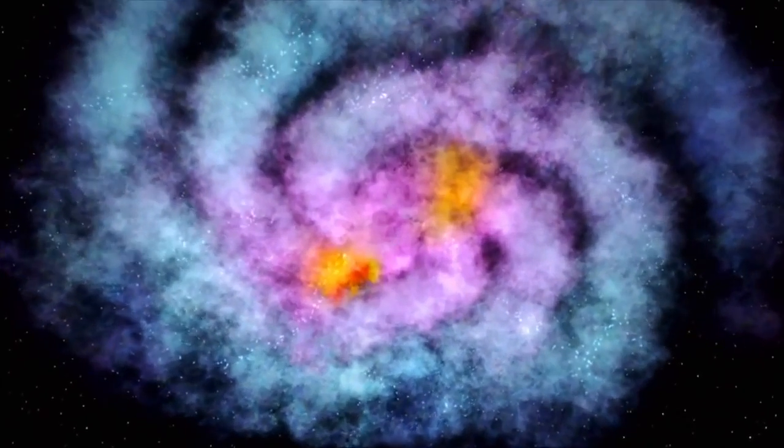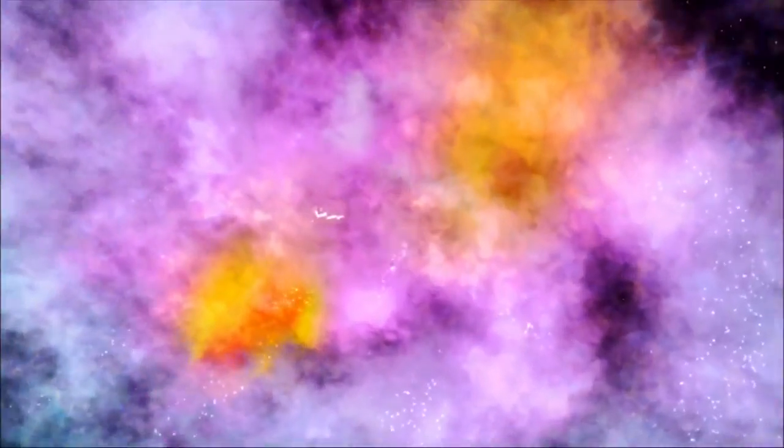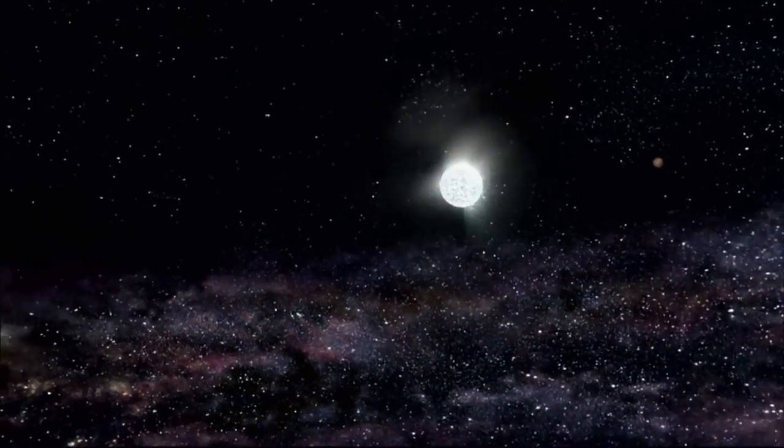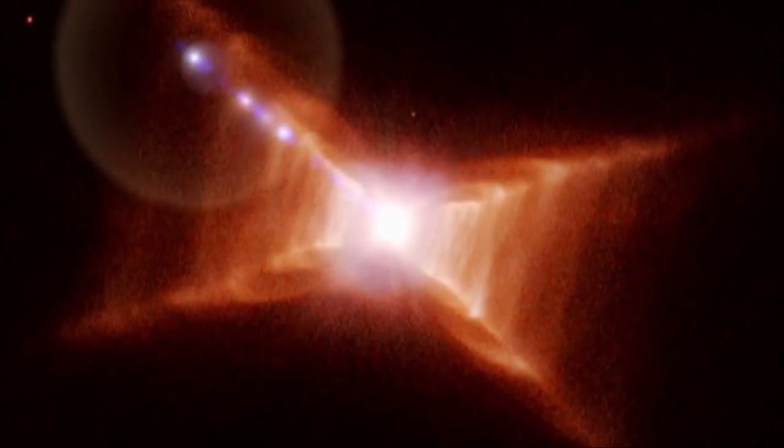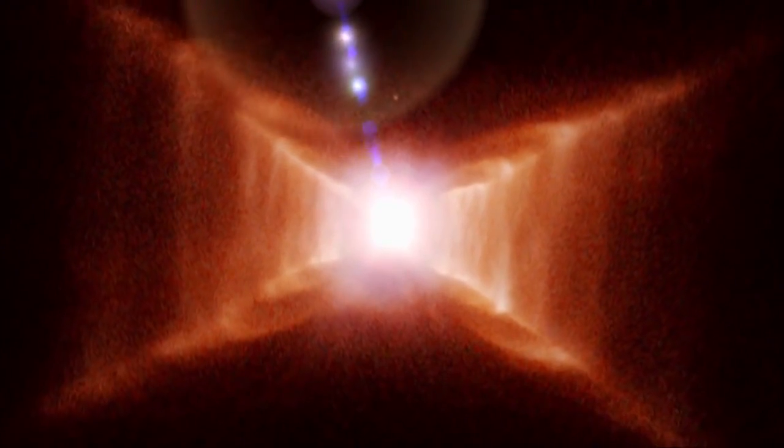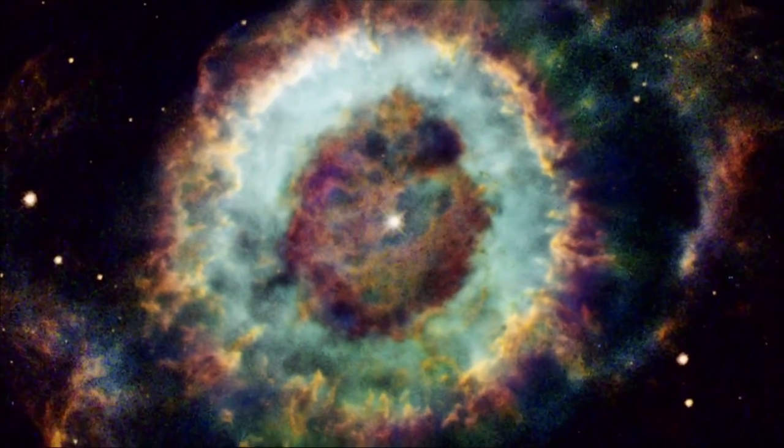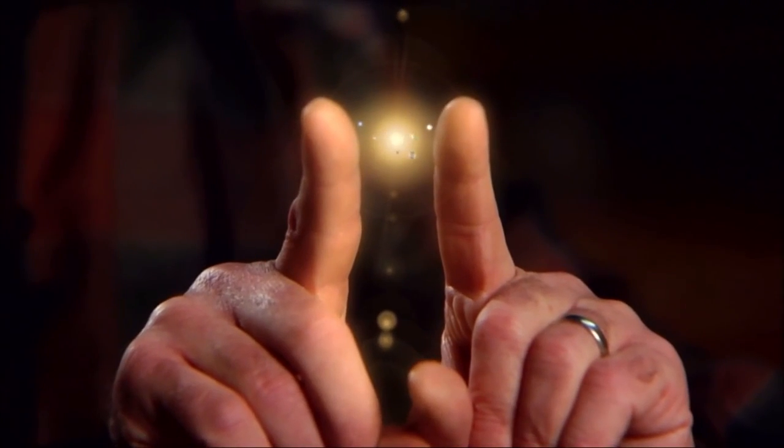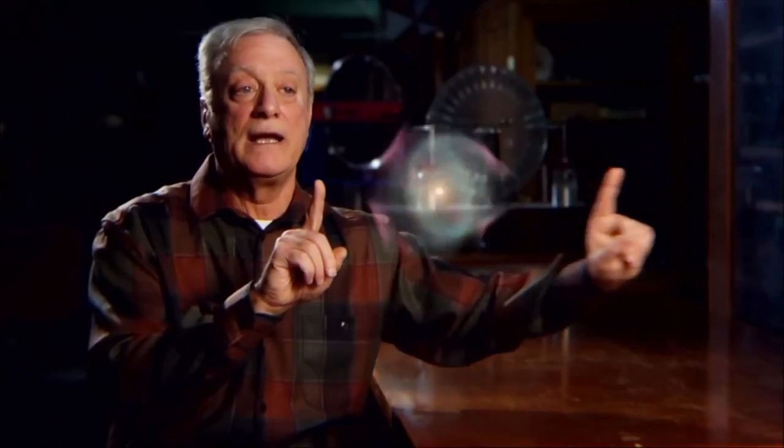There are an estimated 10,000 planetary nebulas in our galaxy, each one displaying the death of a star in its own unique way. Although each planetary nebula is generated by a single star system, their size in comparison is immense. Planetary nebulas are huge. If I had the solar system between my fingers, the planetary nebula would be a thousand to ten thousand times larger in radius.